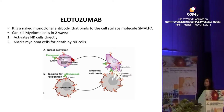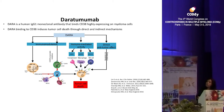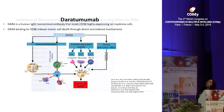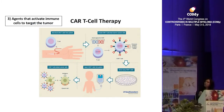Elotuzumab as a single agent showed no activity in myeloma, but in combination with IMiDs it has been shown to be quite effective. Daratumumab is one of the best drugs in this immunotherapy class — it targets CD38, which is highly expressed in myeloma cells, directly binding and killing myeloma cells. It also has an immunomodulatory effect, activating complement and macrophages against the tumor, and killing T-regulatory and myelosuppressive cells that express CD38. Many other monoclonal antibodies are emerging in the myeloma world.